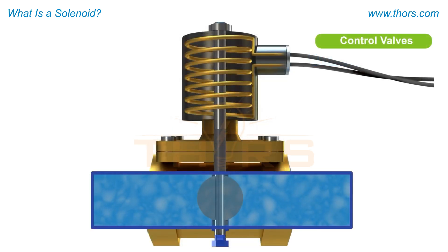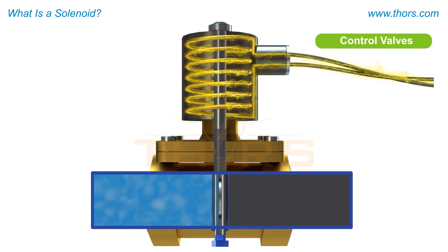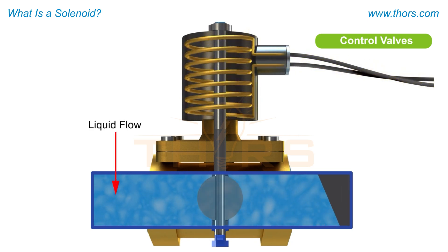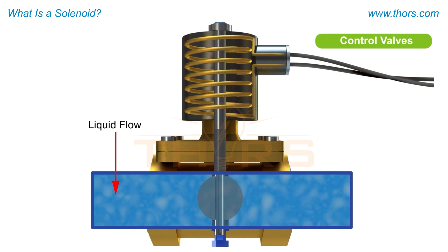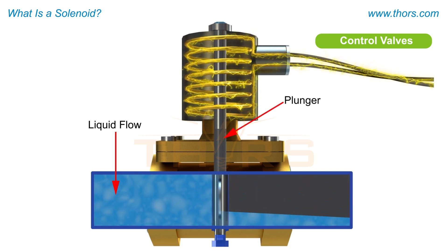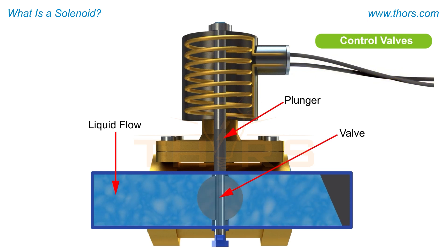Control valves, also called solenoid valves, use solenoids to control the flow of liquids or gases. A solenoid valve uses an electromagnetic field to move a plunger that opens or closes the valve, regulating the flow within pipes.